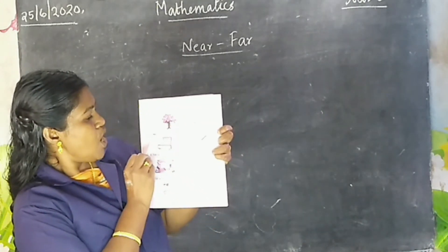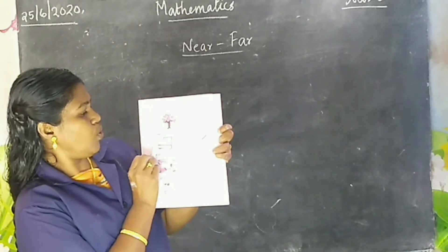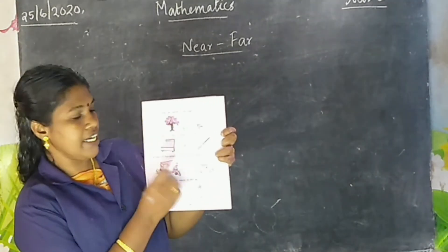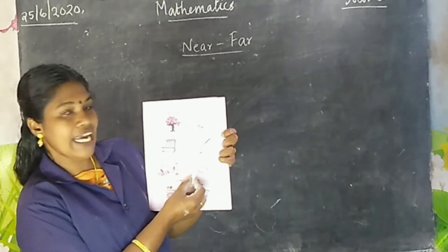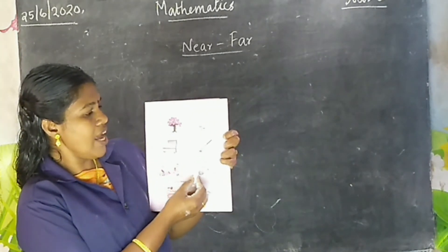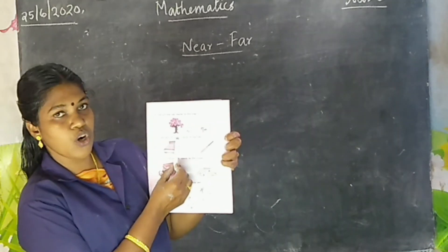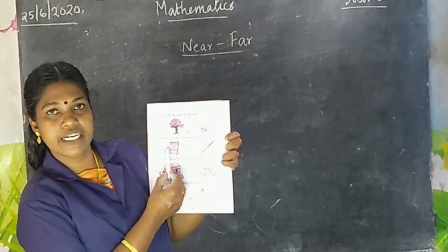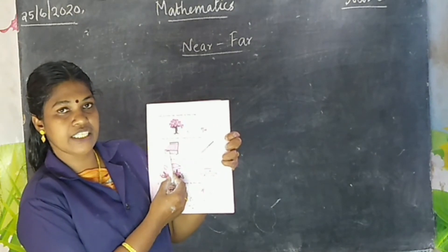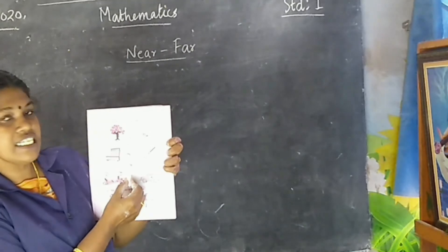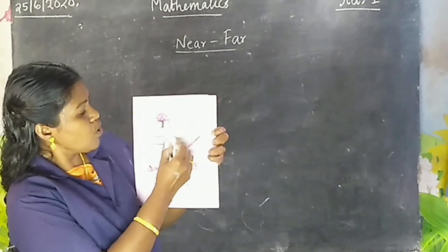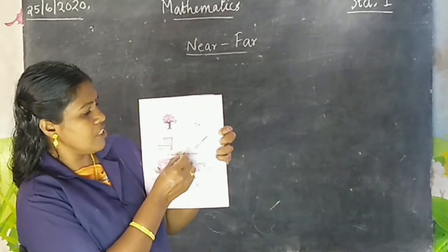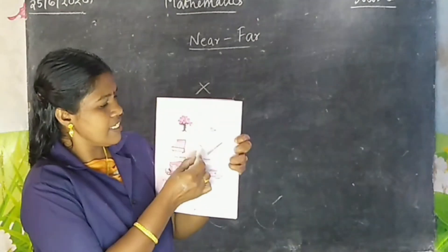Second question: cross the object nearer to the bed. Here a bed, a ball, and a bat. Question is: cross out the object nearer to the bed. Which one, ball or bat, is nearer to this bed? Ball is nearer. Therefore, cross out the ball. Cross means this symbol. Cross this ball.